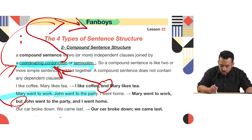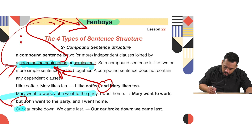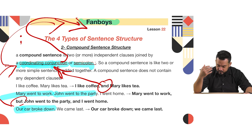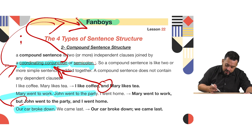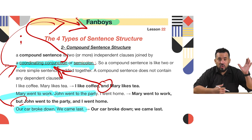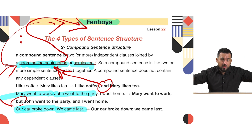Another example: 'Our car broke down' — that is one independent clause. 'Our car' is the subject, 'broke' is the verb, and it's a complete thought. 'We came last' — 'we' is the subject, 'came' is the verb, and 'last' completes the thought. Two perfectly simple sentences: 'Our car broke down' and 'We came last.'